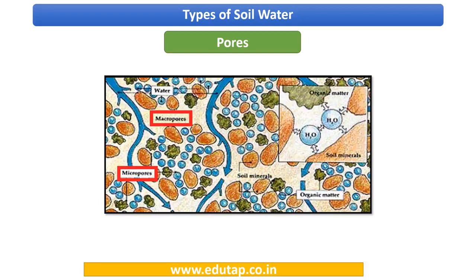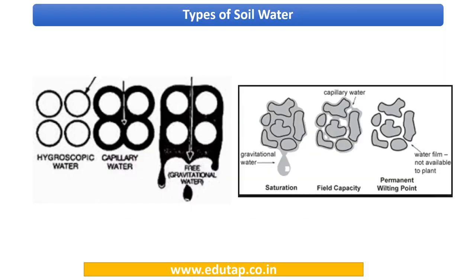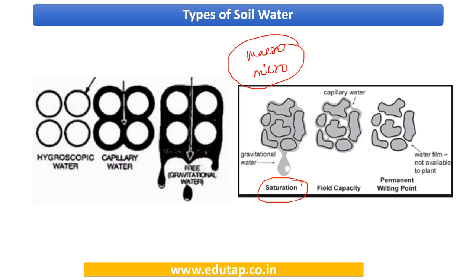Here you can see a picture showing micropores and macropores. Macropores have a large area and micropores are smaller. Now, the types of soil water: when water is poured and reaches saturation level — meaning no more water can be added — all macropores and micropores are filled completely. This water that occupies both macropores and micropores at saturation is referred to as gravitational water.